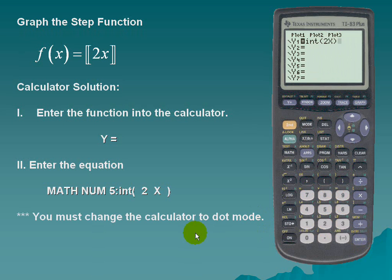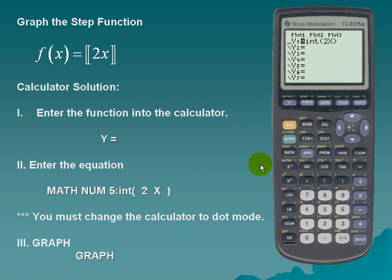Remember, we must change the mode of the calculator to dot mode. Scroll to the far left and change from connected mode to dot mode. Next, graph the function. Here we have the greatest integer function of 2x.